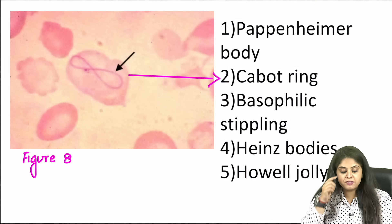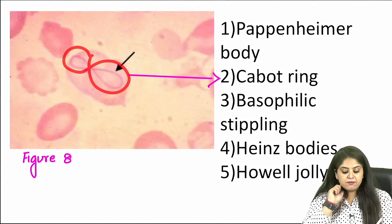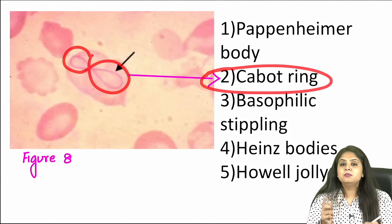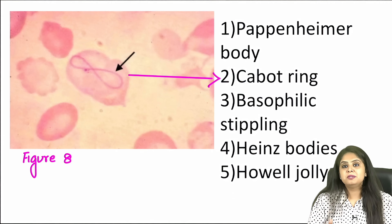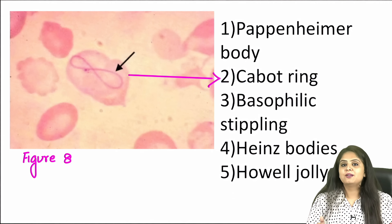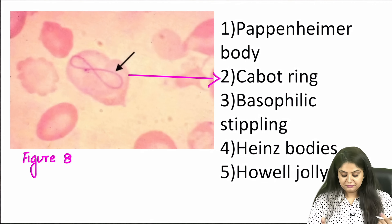The figure-of-eight appearance seen here will easily be matched with the cabot ring, again seen in B12 deficiency or megaloblastic anemia.